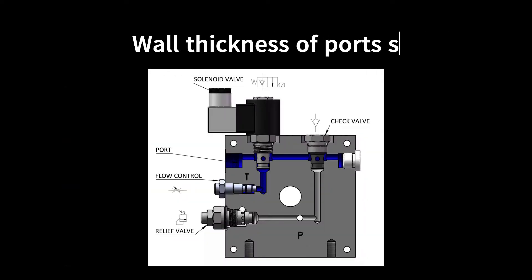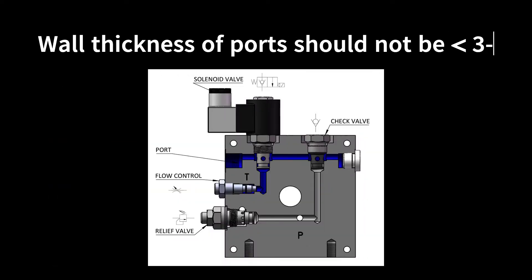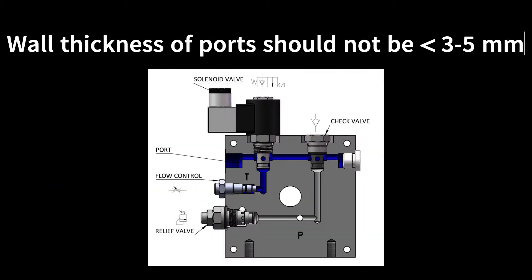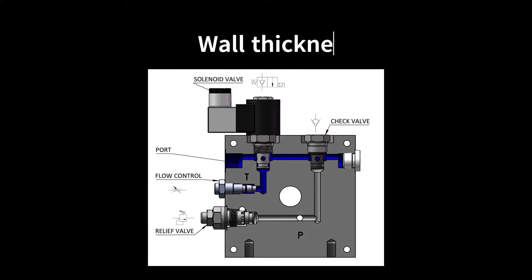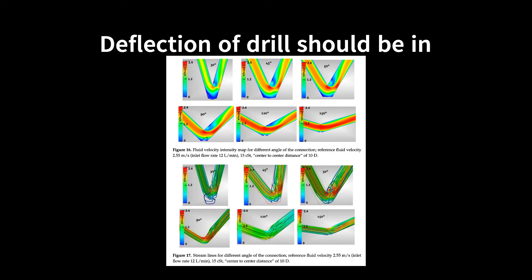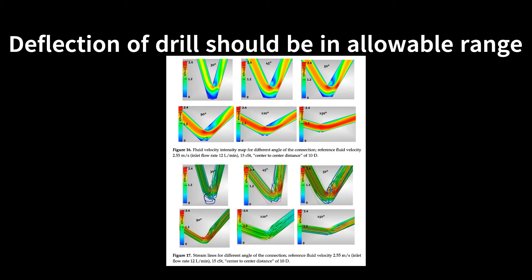Regarding wall thickness of each port, the safety wall thickness between oil chambers shall not be less than three to five millimeters, and the deflection of the drill within the allowable range shall be considered.